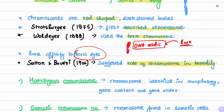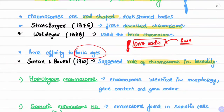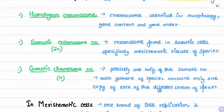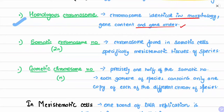Sutton and Boveri in 1902 suggested the role of chromosomes in heredity — how chromosomes transfer characters from parents to offspring. An important term is homologous chromosomes: these are chromosomes that are identical in morphology, gene content, and the order of genes. It is a misconception that homologous chromosomes are only identical in morphology.